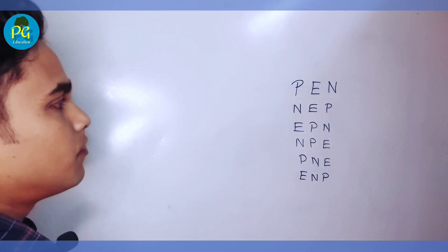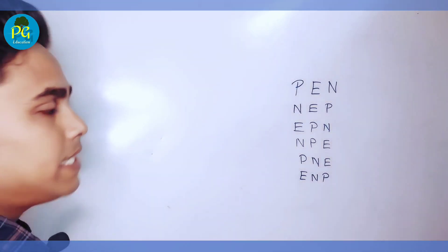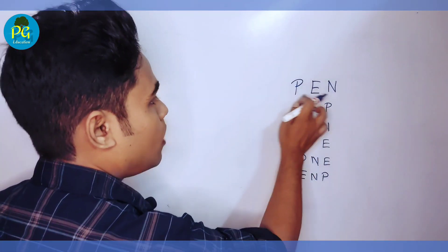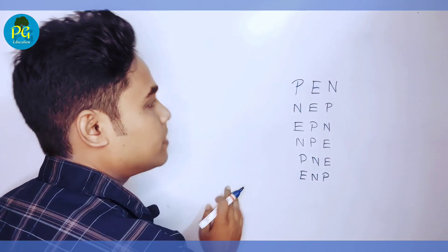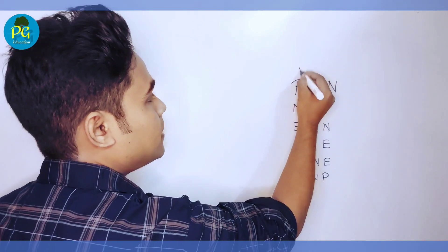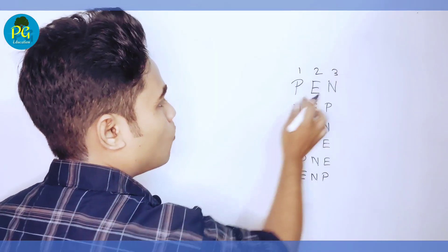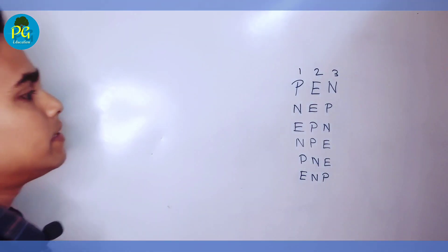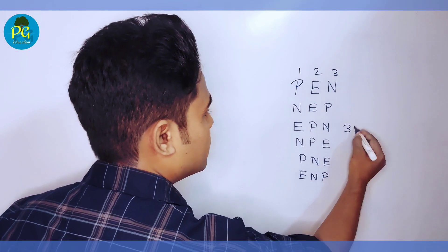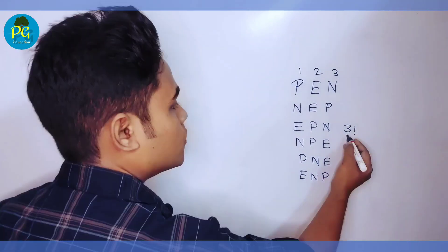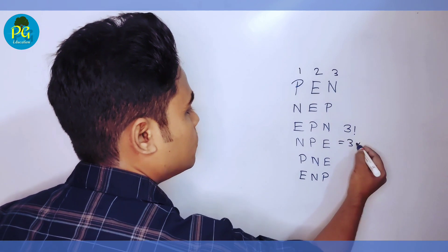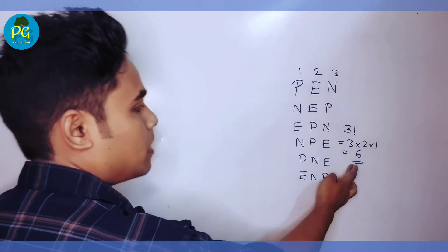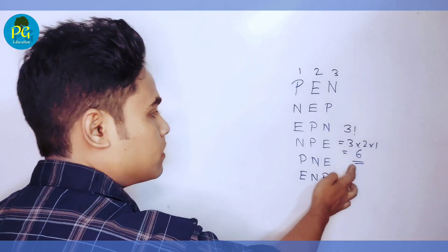But what is the short trick by which we can find the number of arrangements? You count how many letters there are — there are 3 letters: 1, 2, and 3. So the number of ways is 3 factorial. 3 factorial means 3 × 2 × 1 = 6. So we get the number of ways equal to 6.